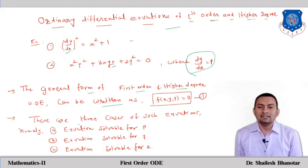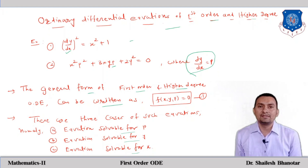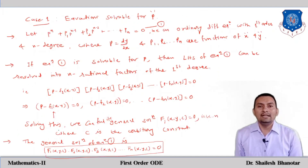There are three cases for solving first order higher degree differential equations: equation solvable for p, equation solvable for y, and equation solvable for x. In this video we are going to focus on the equation solvable for p.